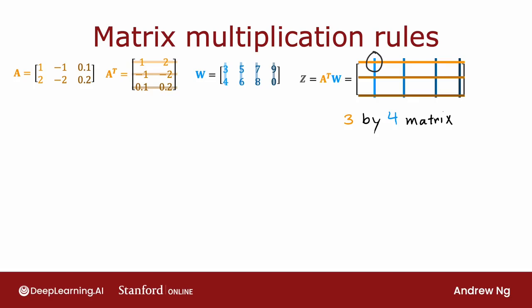Let's figure out how to compute the number in the first row, first column of Z — the upper leftmost element. Because this corresponds to the lightest shade of orange and lightest shade of blue, you grab the first row of A transpose and the first column of W and take their dot product. So this number is 1·3 + 2·4, which equals 11.